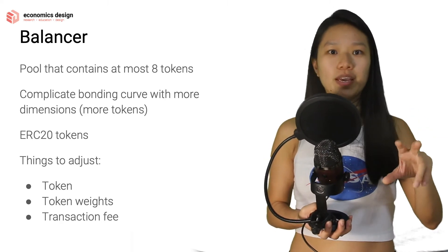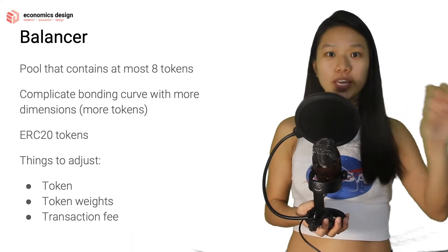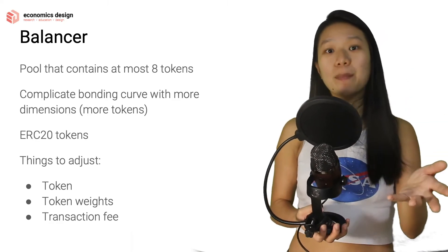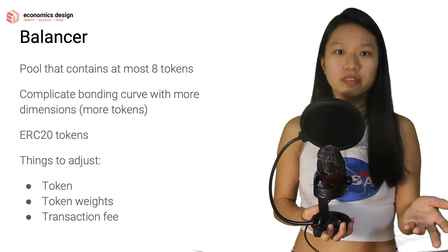So you want to have maybe ten cheese, one wine, and two bread. You get to choose the different token weights. That's what Balancer does. You get to choose your different token weights and transaction fees as well.